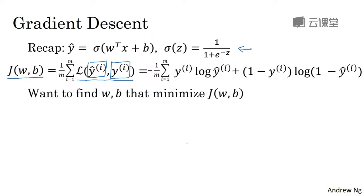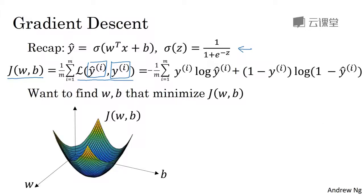So in order to learn a set of parameters w and b, it seems natural that we want to find w and b that make the cost function j of w comma b as small as possible. So here's an illustration of gradient descent. In this diagram,